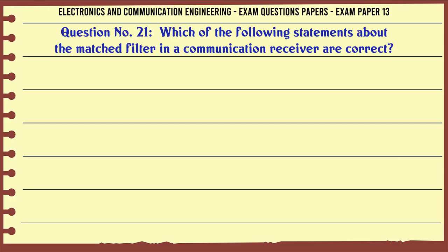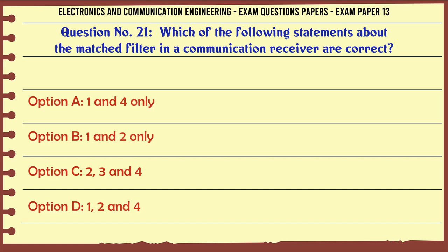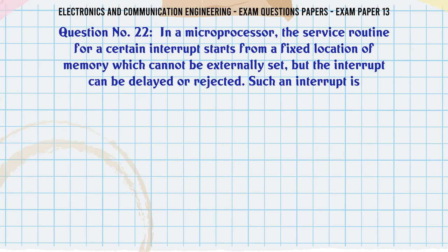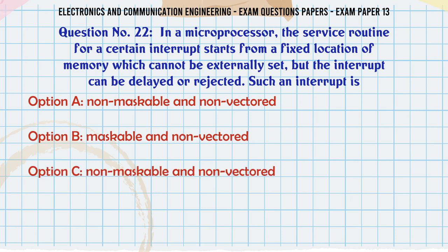Which of the following statements about the matched filter in a communication receiver are correct? A: 1 and 4 only, B: 1 and 2 only, C: 2, 3, and 4, D: 1, 2, and 4. The correct answer is 1 and 2 only.